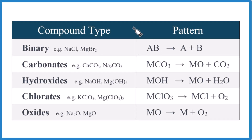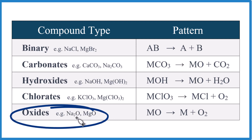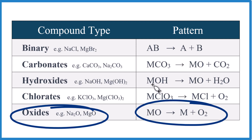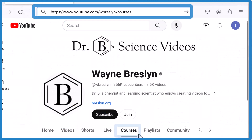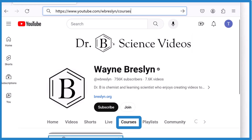Predicting the products of decomposition reactions can be a little challenging because there are a lot of different patterns you need to know. In this video we're going to focus on metal oxides like sodium oxide or magnesium oxide and we use this pattern right here. If you need help with other types of decomposition reactions, go to my YouTube channel page and find the course on predicting the products of chemical reactions, which includes decomposition reactions as well. But let's look at how metal oxides decompose.